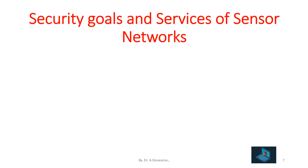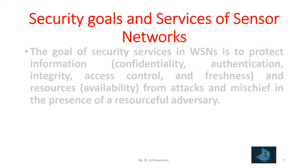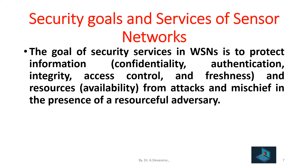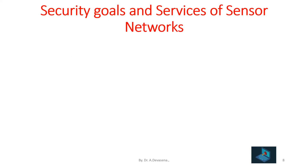The goal of security in wireless sensor networks is to protect information — that is, the confidentiality, authentication, integrity, access control, and freshness of the information — as well as resource availability from attacks and mischief in the presence of a resourceful adversary. Authentication enables every message sender in the sensor networks, including the base station, sensor nodes, and other users, to prove its identity — that is, the legitimacy of the source of a message to the receiver.